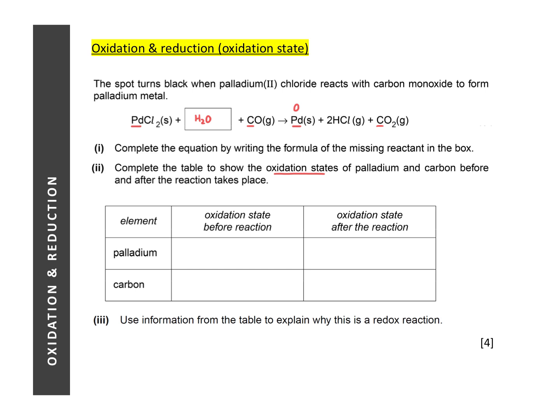For palladium chloride, the name given is palladium(II) chloride. The Roman numeral tells you that palladium has a charge of 2+ or an oxidation state of +2. So the change in oxidation state for palladium will be from +2 to zero. For carbon monoxide, to get the oxidation state of carbon we recall the rule that the sum of oxidation states of atoms in a compound equals zero. Oxygen has a common oxidation state of −2.